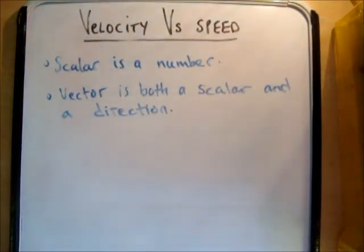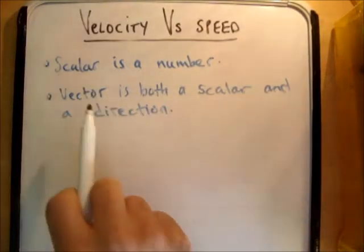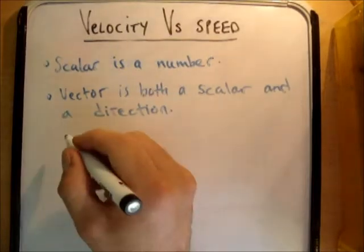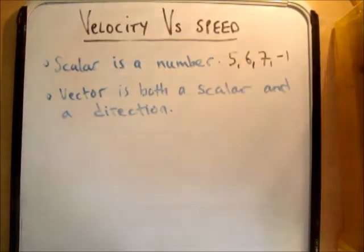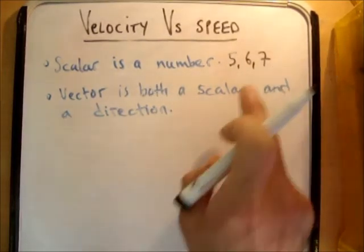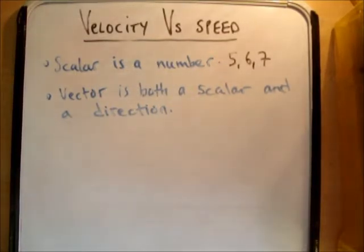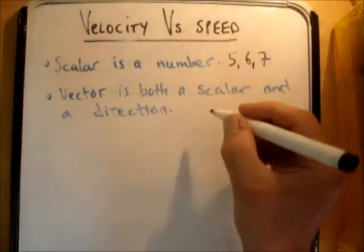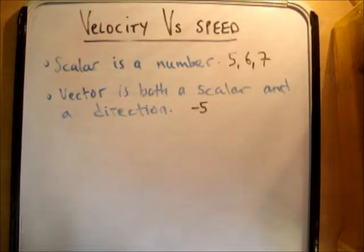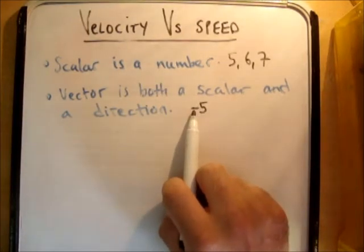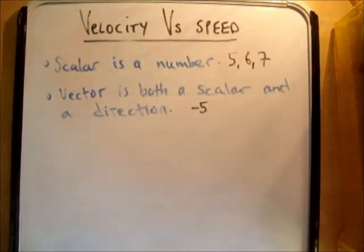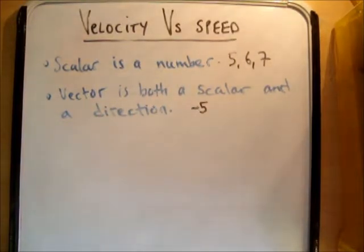The first thing we need to define is what a vector is. We have two things: scalars and vectors. A scalar is just a number — a positive magnitude — it cannot tell you a direction. A vector, however, is both a magnitude and a direction. So through a vector you can tell the magnitude of something and which way it's going. For example, negative five is a vector: it has a magnitude of five going in the negative direction.